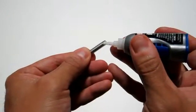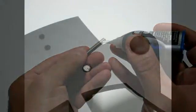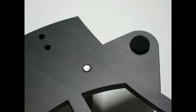Start by applying some thread locking glue to the end of a quarter inch thick threaded stud. Gently thread the end with glue applied into one of the three threaded holes in the upper plate. Turn the stud until it is flush with the other side of the plate. Repeat this process for the remaining two studs.